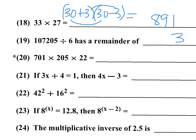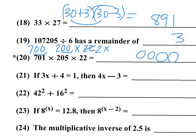Number 20 (approximation): 700 times 200 times 22. The two hundreds give four trailing zeros. Now compute 7 times 2 times 22: 7 times 2 is 14; think of 22 as 2 times 11, so 14 times 2 is 28, then 28 times 11 — using the 11 shortcut: 8, 2+8=10 carry 1, 2+1=3 — gives 308. With four zeros appended, the approximation is 3,080,000.